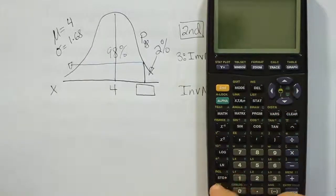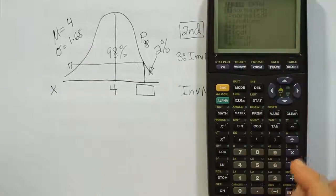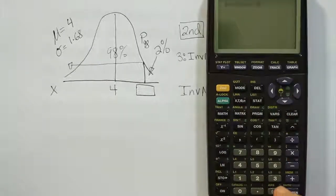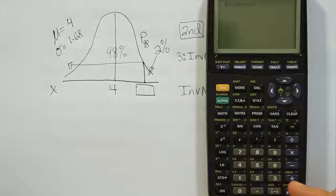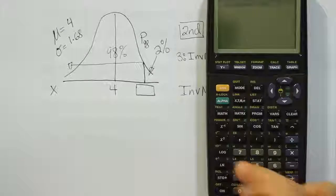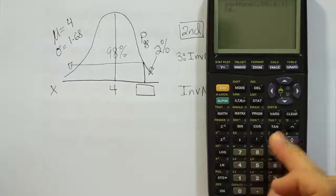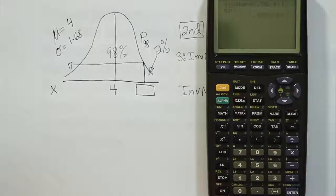So there's our graphing calculator. Turn it on. We're going to hit 2nd, VARS. We're going to take option 3 this time, where it says inverse norm, and then I'm going to give it the values I just said, which is 0.98, the mean, which is 4, the standard deviation, which is 1.68. Close it up, hit enter, and we get our results.